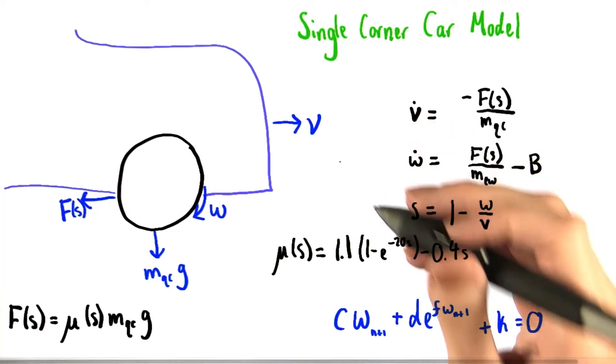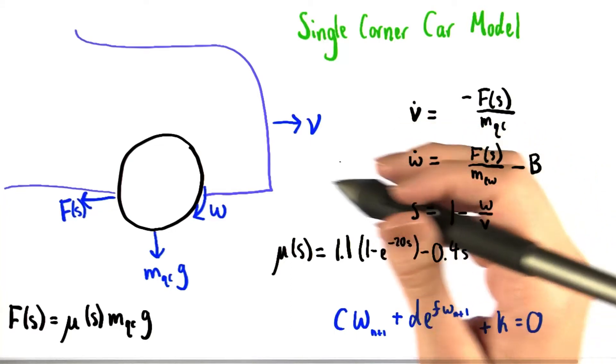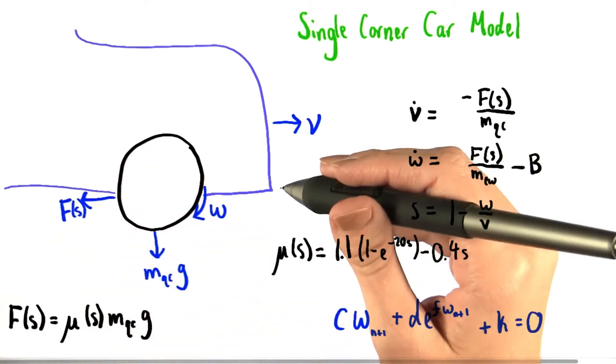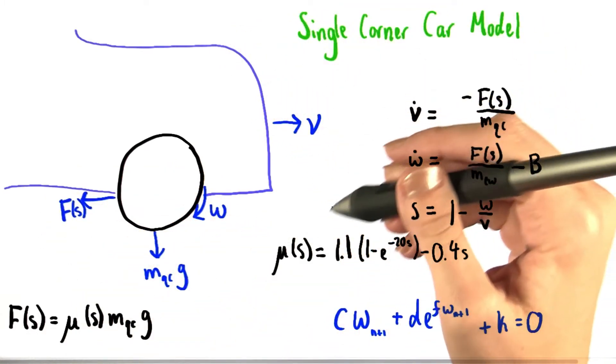For this problem, you're going to develop a semi-implicit solver to model just a single corner of a car and its motion. You saw a diagram that looked pretty much just like this in the unit.